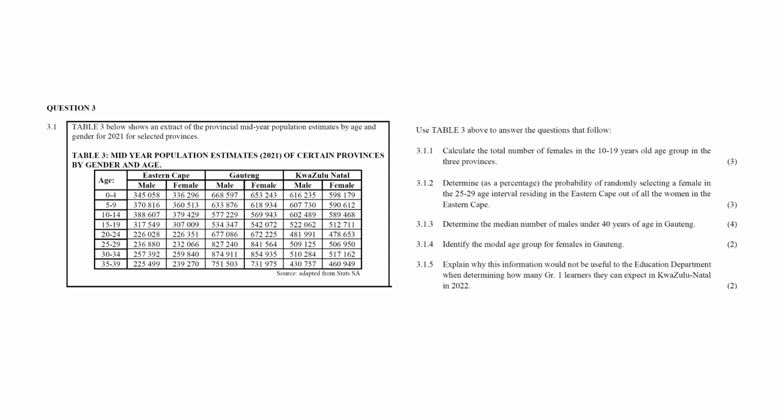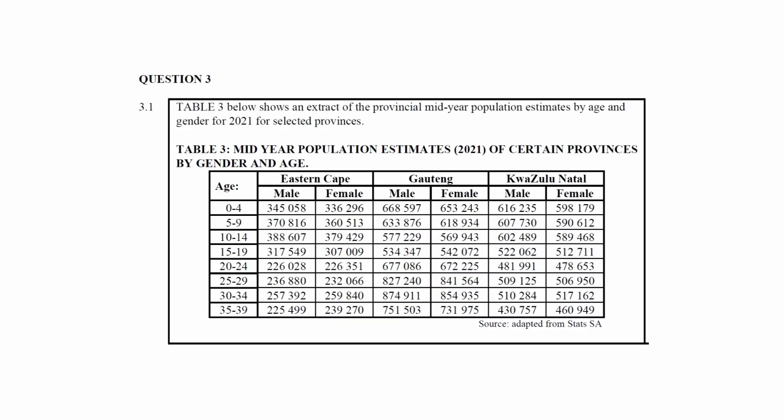Question 3.1 consists of five data handling questions designed to assess your understanding of data analysis. You are given a table that shows an extract of the provincial mid-year population estimates by age and gender for 2021 for the provinces of Eastern Cape, Gauteng, and KwaZulu-Natal.